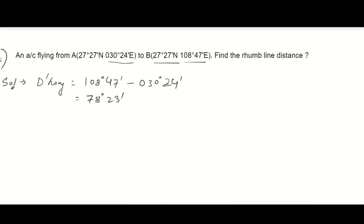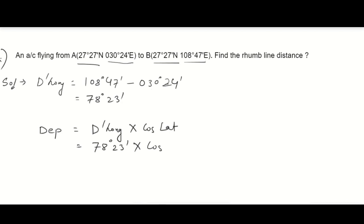The latitude is the same at 27°27'N — there is only a change in longitude. So we use the departure formula: departure = d-long × cos(latitude). With d-long = 78°23' and latitude = 27°27', the calculation gives an answer of 4173 nautical miles.